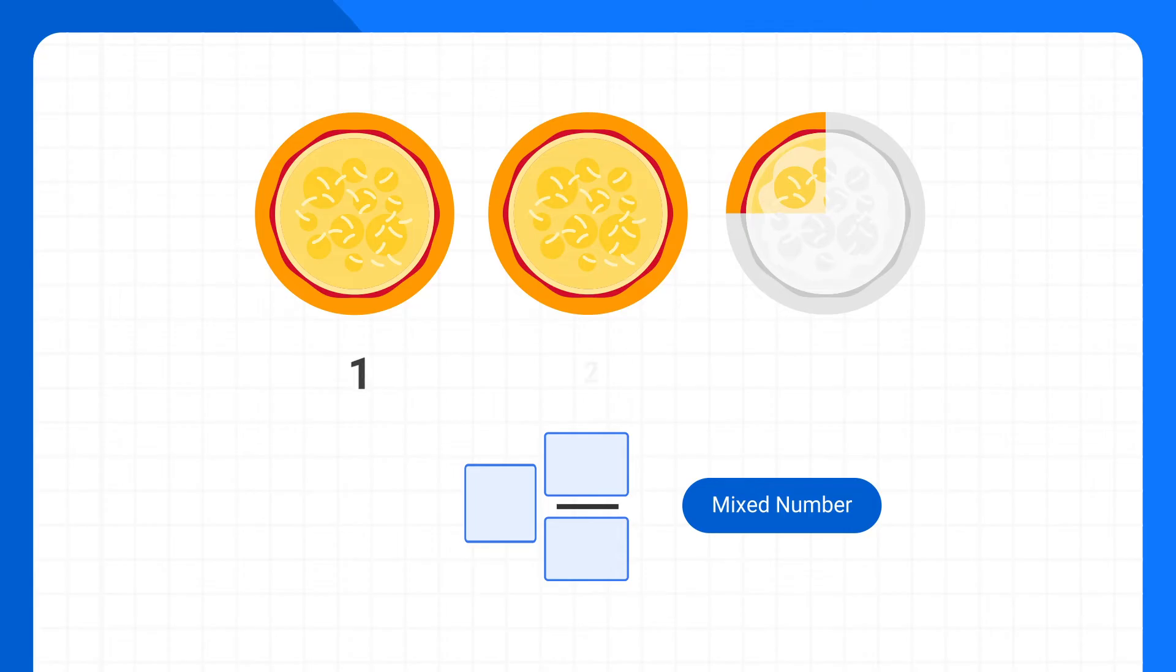Here, we would count that we have two whole pizzas, so we write down two as our whole number. Then we identify that this fraction represents one-fourth of a pizza, so we write down the fraction one-fourth. That's all there is to it. This is our mixed number. We can say that we have two and one-fourth pizzas.